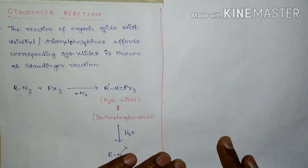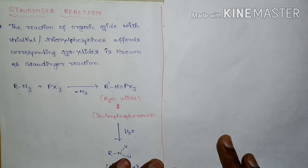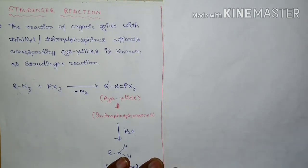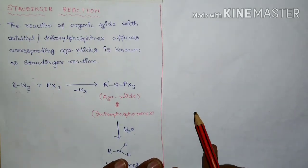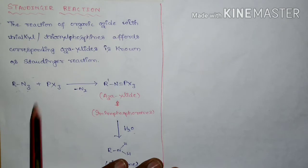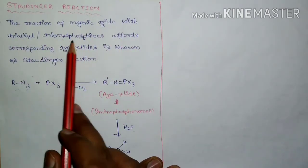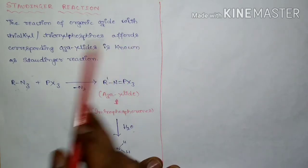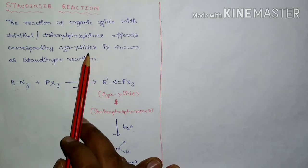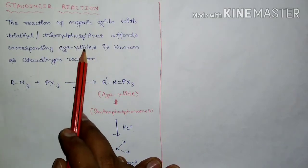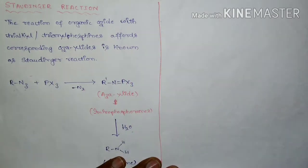Hello students. Today I am going to discuss a reaction in which you can see two named reactions. The first is the Staudinger reaction. It is the reaction of an organic azide with trialkyl or triaryl phosphines to form the corresponding iminophosphoranes, and these iminophosphoranes are also known as the product of the Staudinger reaction.